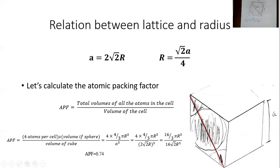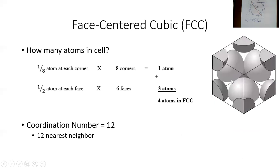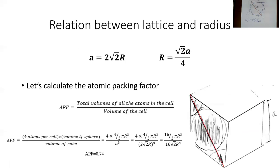Let's calculate the packing factor. I have a bunch of spheres inside the cube and there's empty white space — I cannot fill the entire cube with spheres because they're spherical and the cube is cubical. What percent of the space is occupied by atoms? If I have the volumes of all the atoms and the volume of the cell, I can get the fraction occupied. The volume of the cell is simply A³.